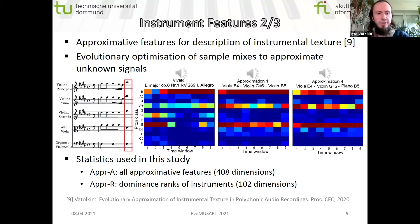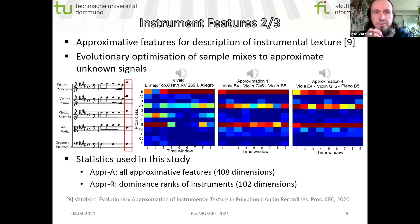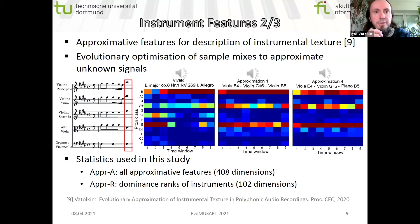Two approximative feature sets are used: all approximative features, leading to 408 dimensions, and dominance ranks of instruments, which is 102 dimensions. For the ranks, all instruments were sorted according to similarity to the unknown recording — for example, if violin had the highest probability of occurring, it received rank one, the next instrument received rank two, three, and so on — then normalized to values between zero and one.